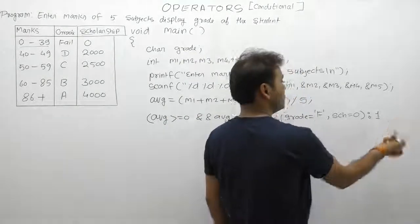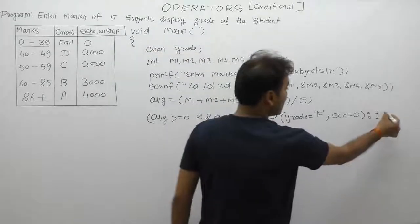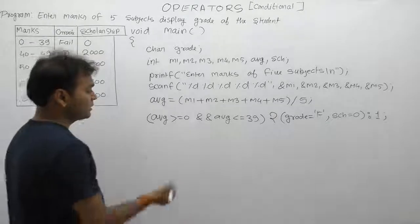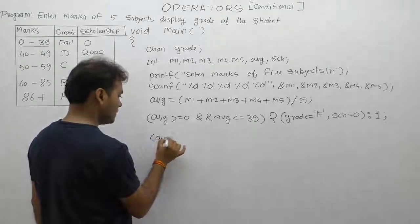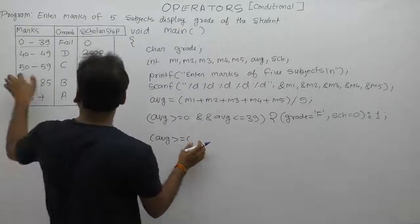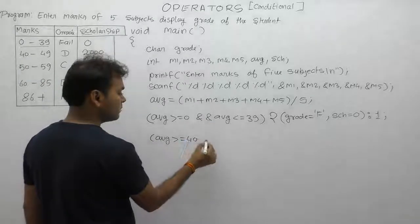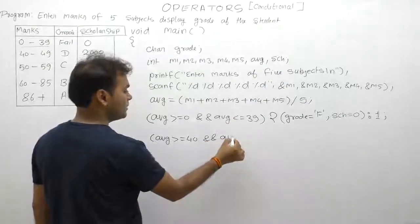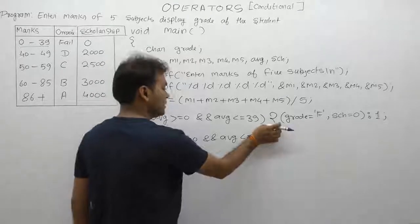Similarly, how many conditions will we provide? Four conditions, five conditions. Next condition: if average is greater than or equal to 40 AND average is less than or equal to 49 - minimum criteria is 40.